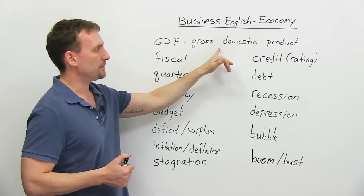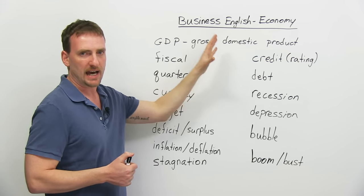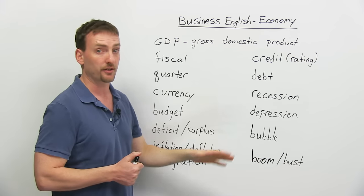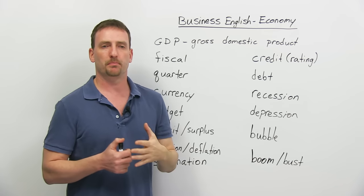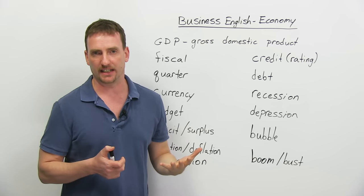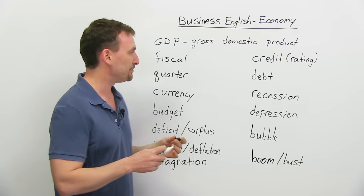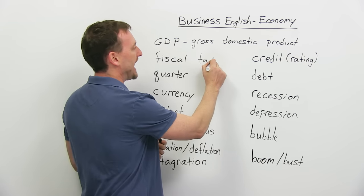When we're talking about GDP, we're going to refer back to this expression when we're talking about some of these other words. So first, let's look at fiscal. Fiscal basically means anything to do with money, anything to do with financial matters, especially when we're talking about taxes.